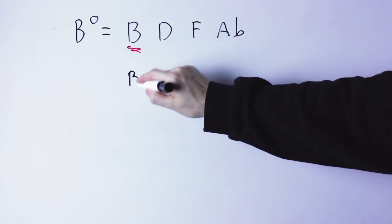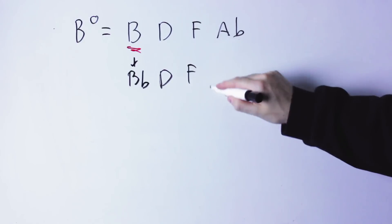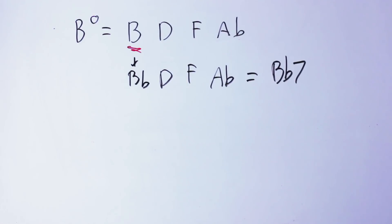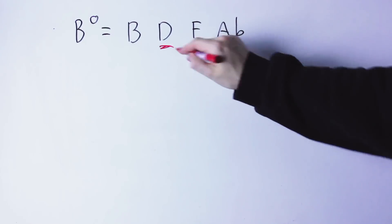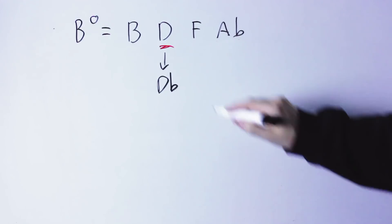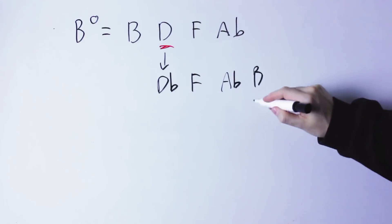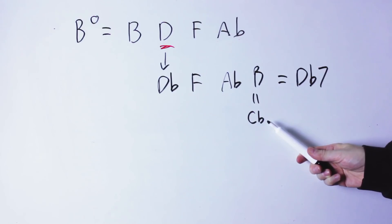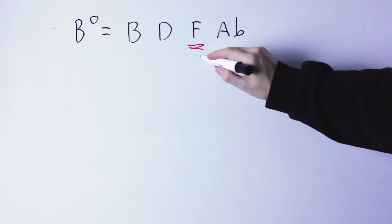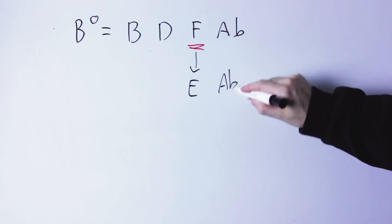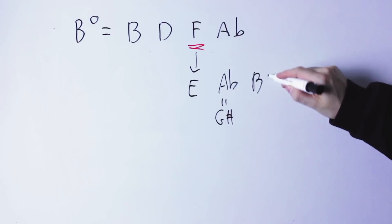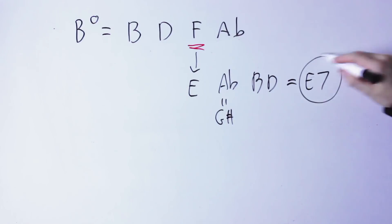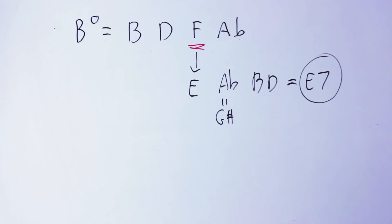If I take the B note and lower it a half step to B flat, I have B flat, D, F, A flat — this is a B flat dominant seventh chord. If I take the D note and lower it a half step to D flat, I get D flat, F, A flat, B — which is enharmonic to a D flat dominant seventh chord; it has the same notes but spelled differently. And finally, if I take the F note and lower it by a half step to an E note, I get E, A flat, B, D — which is enharmonic to an E dominant seventh chord E, G sharp, B, D, because A flat and G sharp are the same note.